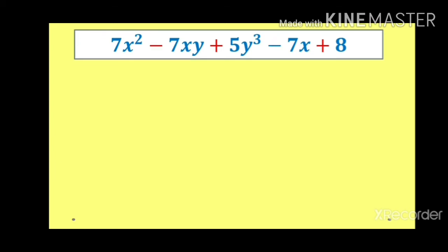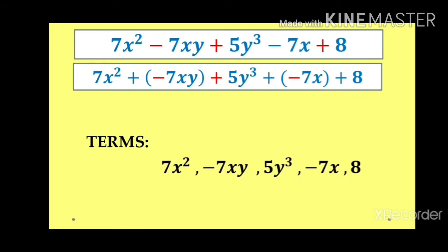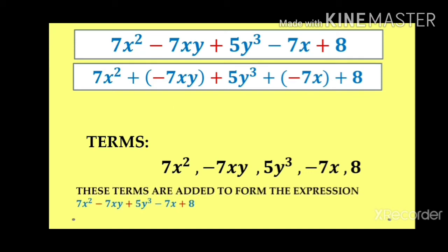Let's take another expression that also involves the minus symbol. Wherever minus is there, we can convert it: minus 7xy can be written as plus of minus 7xy, and minus 7x can be written as plus of minus 7x. So the terms are 7x², −7xy, 5y³, −7x, and 8. We can take −7xy directly as a term with a negative sign. These terms are added to form the expression 7x² − 7xy + 5y³ − 7x + 8.